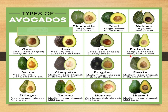Then Lula, which is large pear-shaped and slightly sweet; then Pinkerton, which is large elongated with rich nutty flavor; then Bacon, which is medium oval with light creamy flesh; then Cleopatra, which is medium pear-shaped with rich creamy flesh; then Gaspard, which is medium pear-shaped and dry.